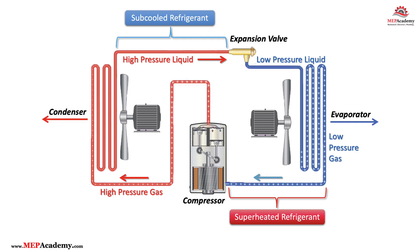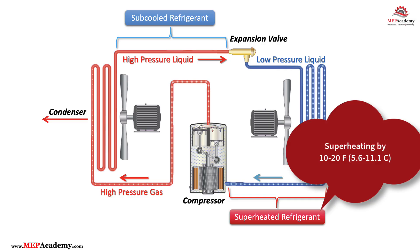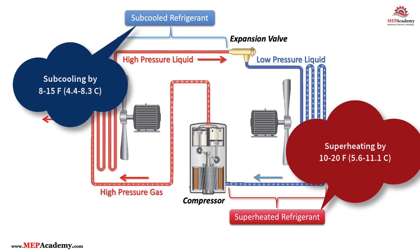Typical targets: superheat is 10 to 20°F (5.6 to 11.1°C) depending on system and load. Subcooling is 8 to 15°F (4.4 to 8.3°C), which is common on most systems. But always refer to the manufacturer's specs.